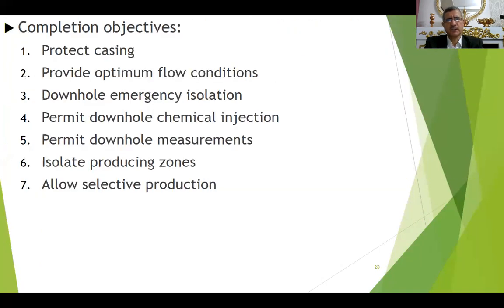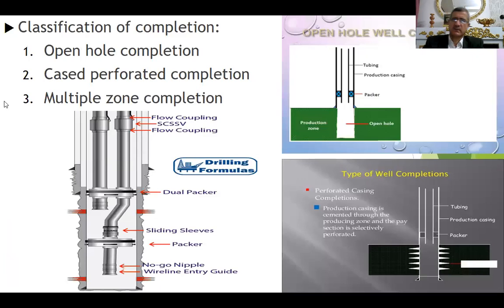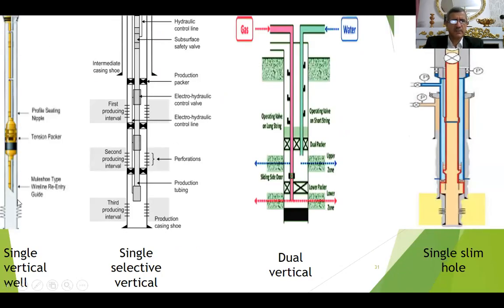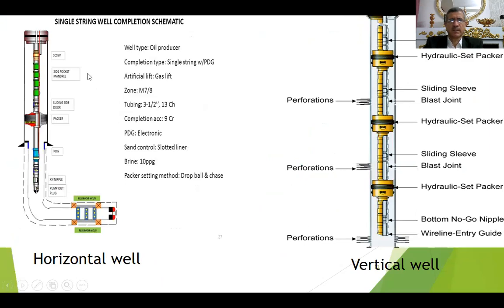Here the completion. We run it after drilling the well and running casing and cementing the casing. We have different types of completion: open hole completion — where we don't run casing into the formation — then cased perforated completion, then multiple zone completion. We have also depending on the type: single vertical well, single selective vertical, dual vertical, and slim hole. This is a vertical well and this is a horizontal well.